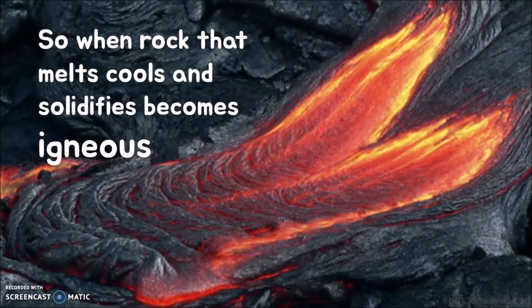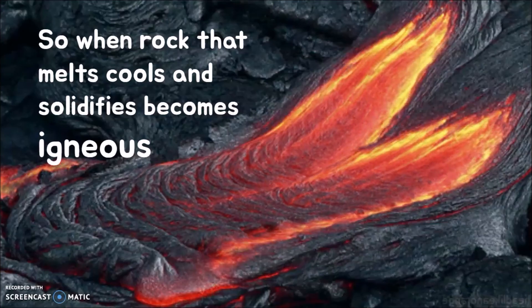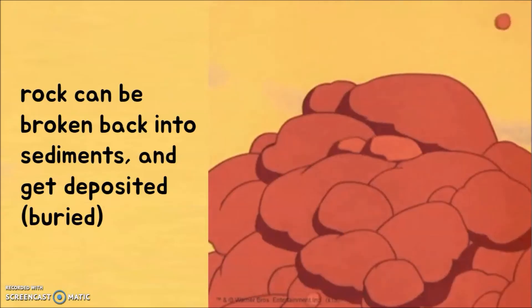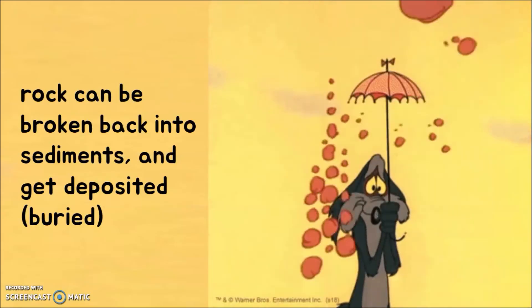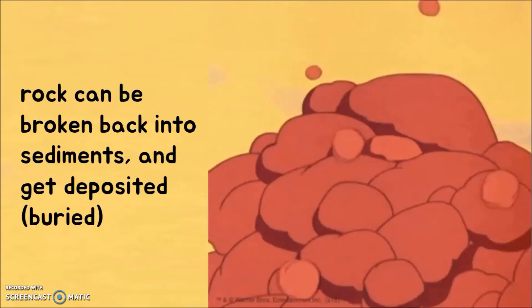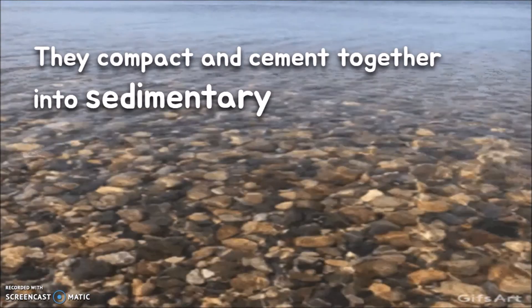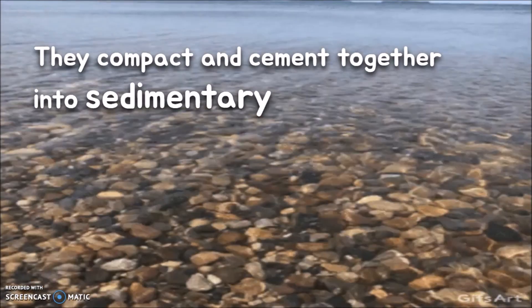To summarize the rock cycle, when rock that melts into magma cools and solidifies, it becomes igneous rock. Those rocks can be broken into sediments, and eventually they get deposited and buried. They then compact and cement together into sedimentary rocks.